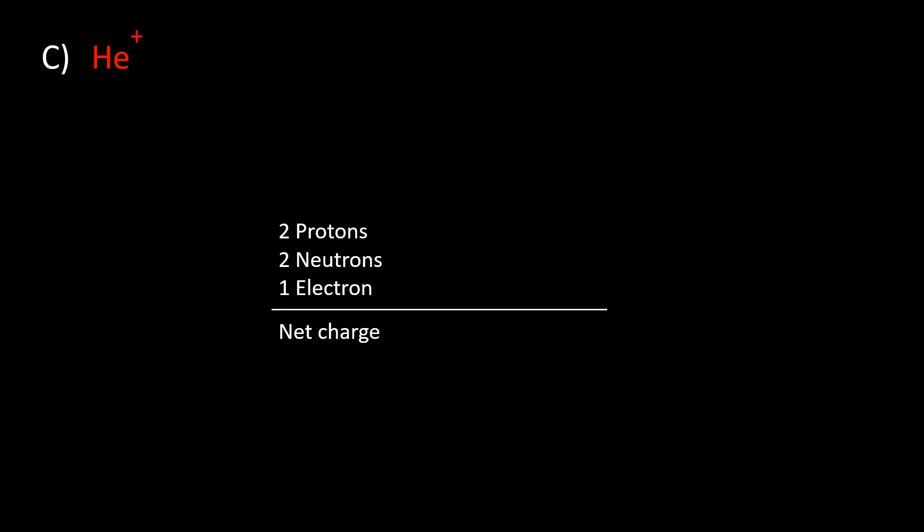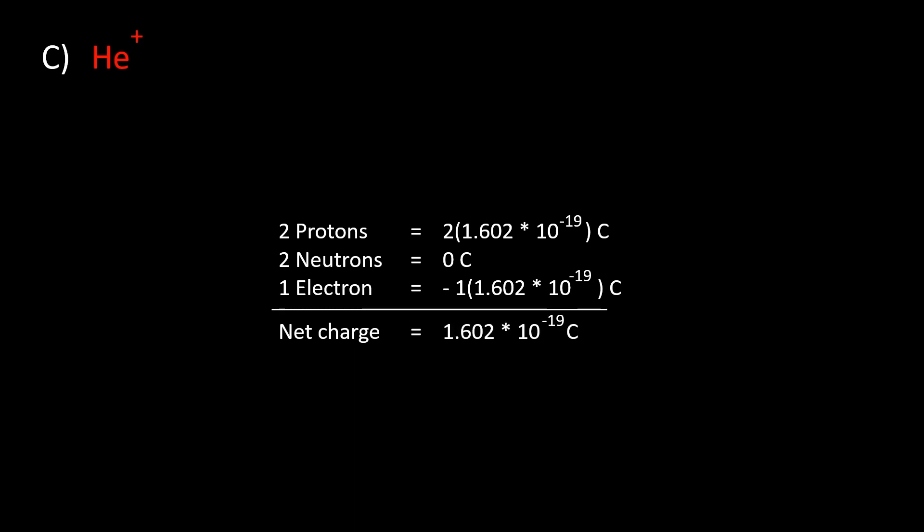For atom C, the net charge is +1.602×10⁻¹⁹ Coulombs. There are two protons, one electron, and two neutrons. The positive charge exceeds the negative charge, meaning that if you sum all the charges, the resulting charge will be net positive.